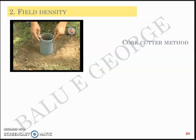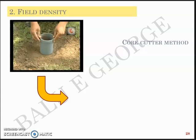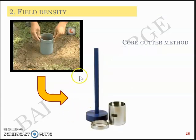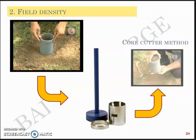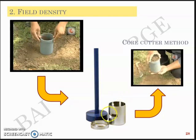The core cutter method is a very simple test. To determine the field density of soil, you use what is called a core cutter and a collar. You go out to the field and drive the core cutter into the ground using a hammer. The collar is provided at the top of the core cutter so that the hammer blows are not directly on the core cutter but instead transferred through the collar.